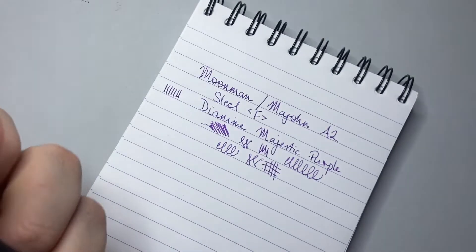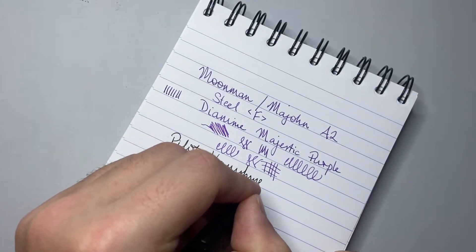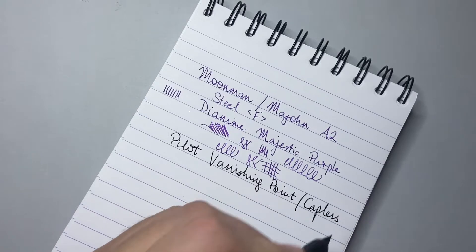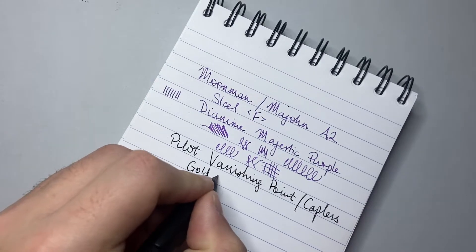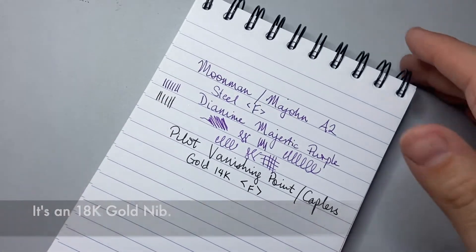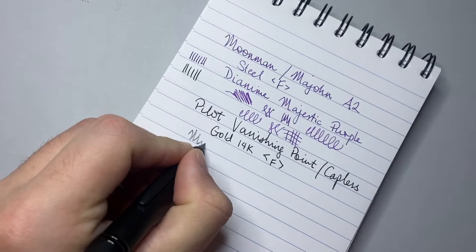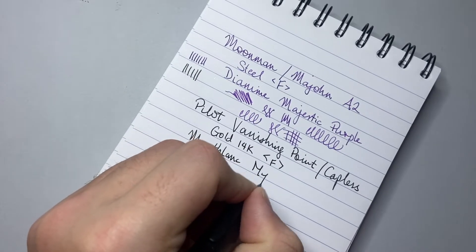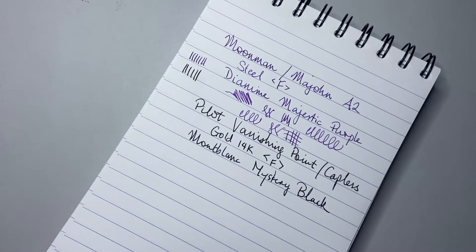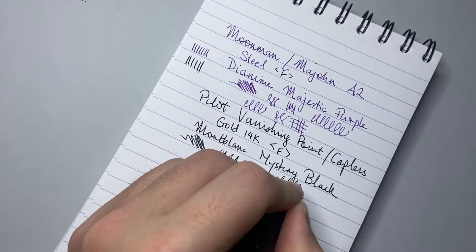Now if we look at the Pilot Vanishing Point with a gold fine nib. I think it's 14k. I will check and I'll put that down in the description if it's wrong. You can see it writes broader than the Moonman, just slightly. And I should say this ink is Mont Blanc Mystery Black. Not my favourite black ink but a pretty sturdy ink. This writes considerably wetter and it is definitely smoother.